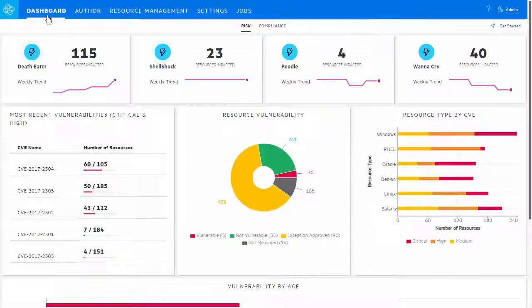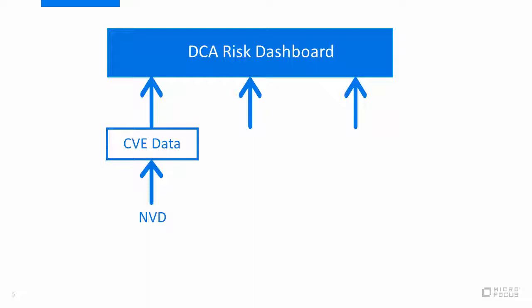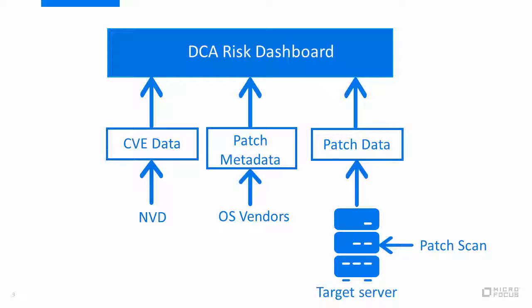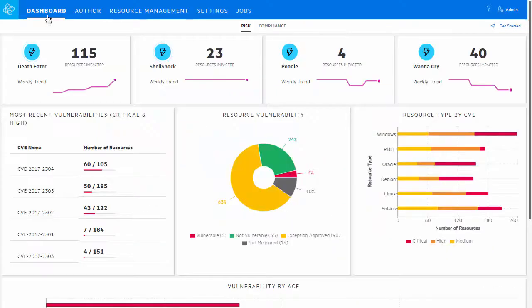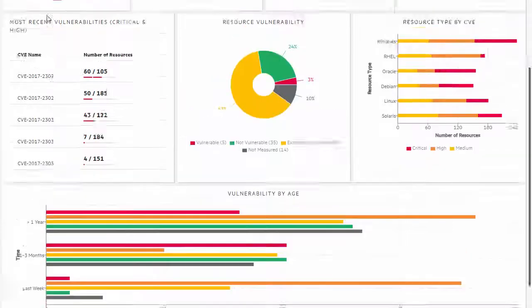The DCA Risk Dashboard shows vulnerability risk across servers using data from three sources: Common Vulnerabilities and Exposures data listed in the National Vulnerability Database. The NVD data is used to identify the latest vulnerabilities published by severity and date, patch metadata from OS vendors, and patch scanned results which indicate the patches required to remediate impacted resources. DCA reports this information to give an actionable risk dashboard.